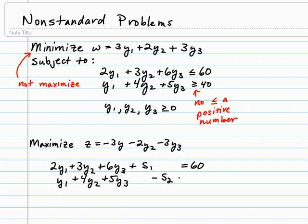And then we're going to subtract off the surplus s sub 2 to get us back down to 40. And from here, we want to move into writing our initial tableau.